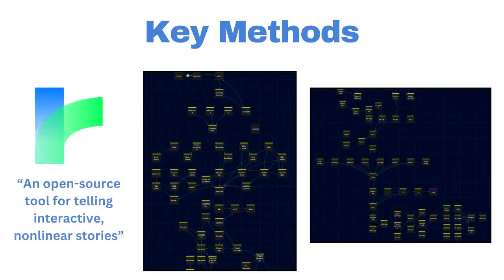The main part of our project is this program itself. We started coding through a software called Twine, which is an open source tool for telling interactive non-linear stories. We added scenarios upon scenarios to make a coherent story through this program. There are over 10,000 words in the code, which translates to over 100 scenarios that could be seen in the game. While most players will not be able to see all of them, they will get a very personalized experience that is tailored for them.